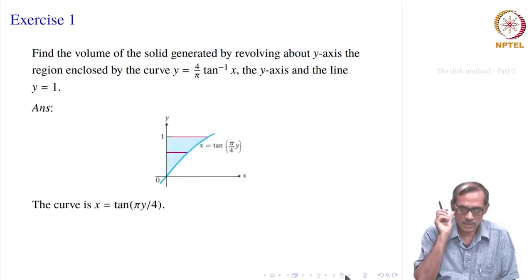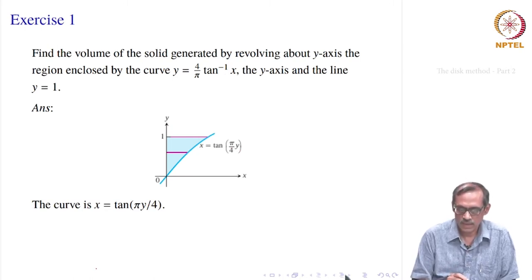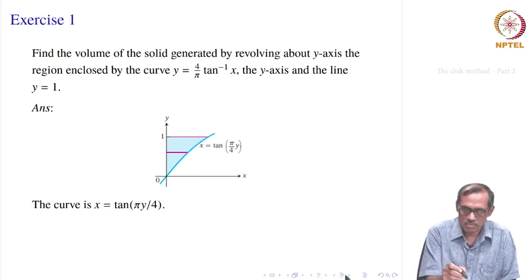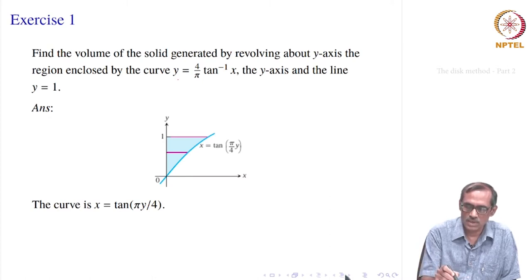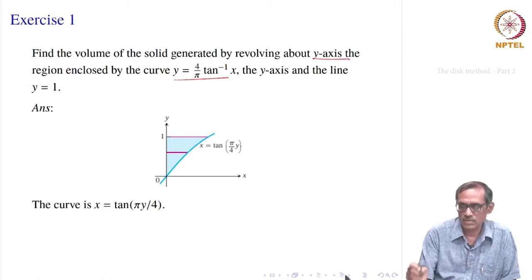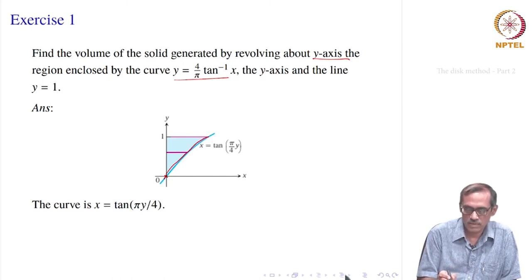We can rewrite x equal to tan(πy/4) instead of y equal to (4/π) tan⁻¹ x. Now everything is expressed in terms of y — x is a function of y. We have the limit y = 1, and the other limit is found from the intersection of the curve with the y-axis, which turns out to be y = 0. So the region from y = 0 to y = 1 is revolved around the y-axis.